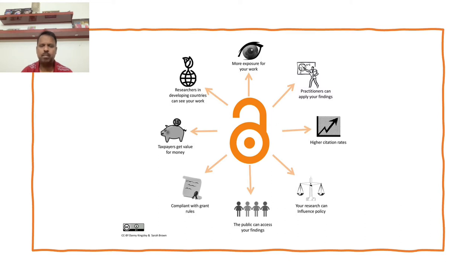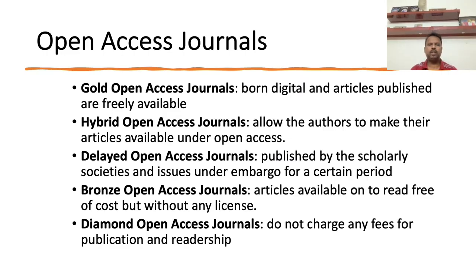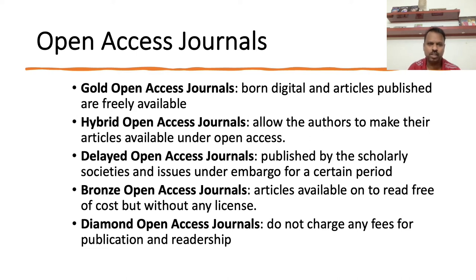There are more benefits because of openness. Now let's look at how open access publishing happens. It happens through journals — you can directly submit to a journal. There is the gold route, also called golden open access. There are several varieties: golden open access journals, gold open access journals, hybrid open access journals, delayed open access journals, bronze open access journals, diamond open access journals.